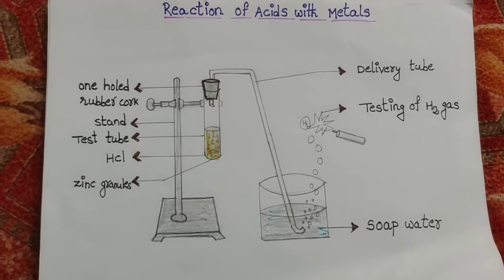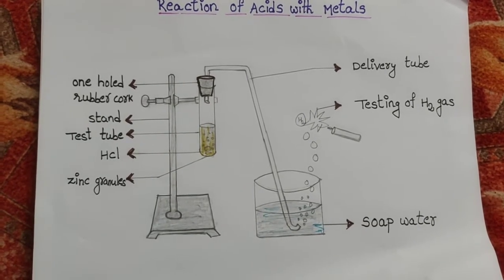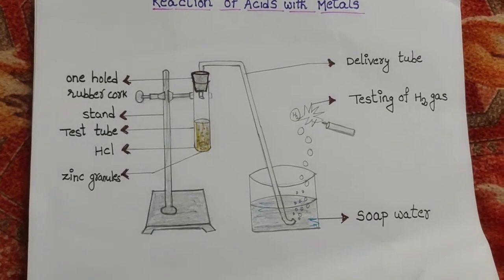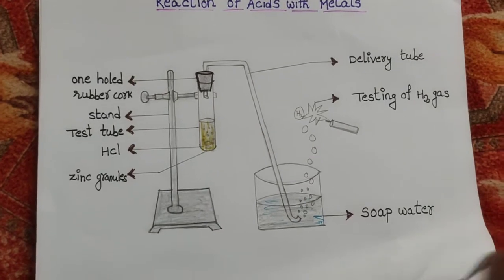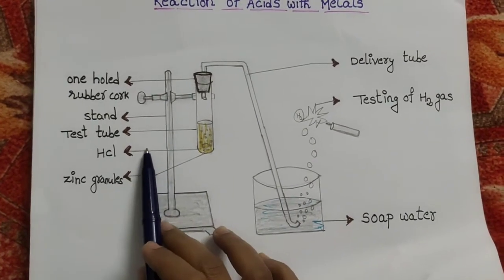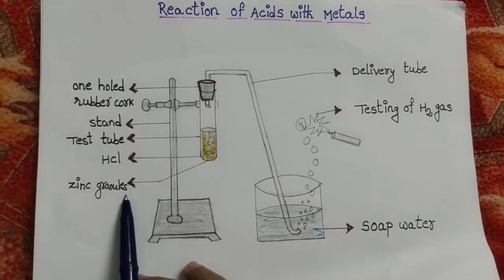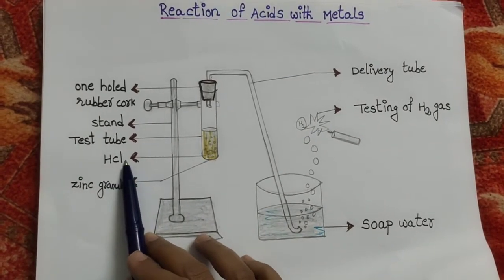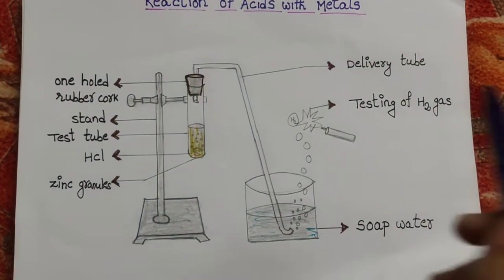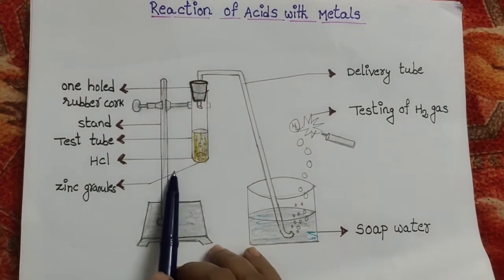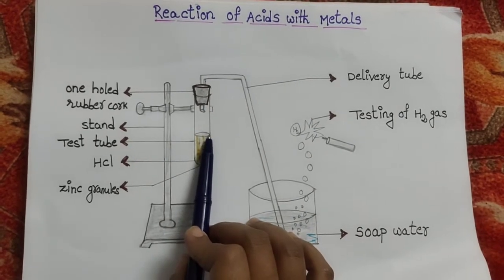This experiment uses specific glassware and chemicals. The two main chemicals are HCl and zinc. Here I am going to show you the diagram of zinc granules, zinc metal, and HCl acid. This is a stand, and the stand is used to hold the test tube.